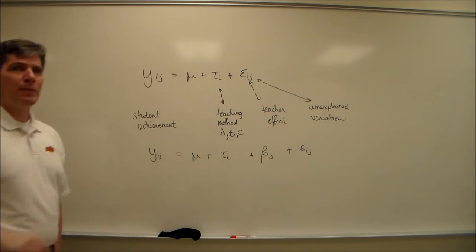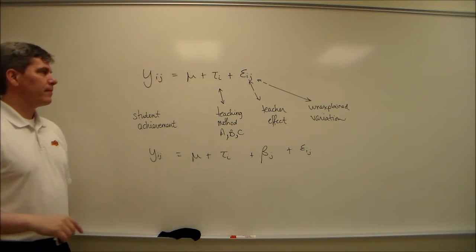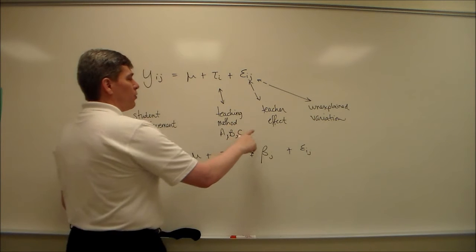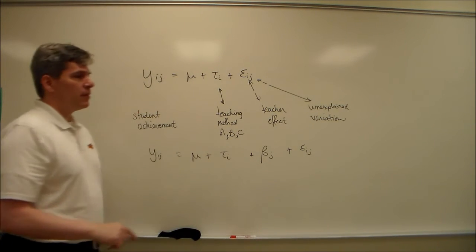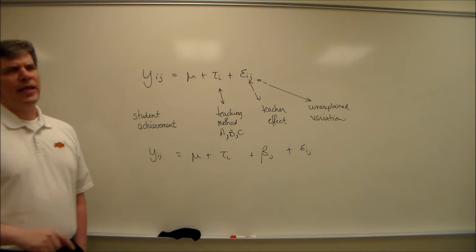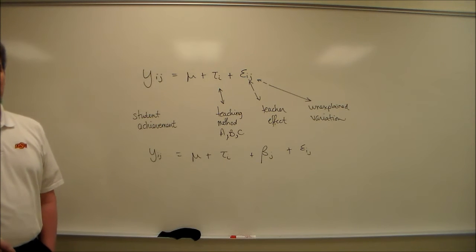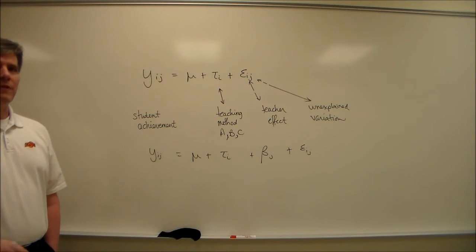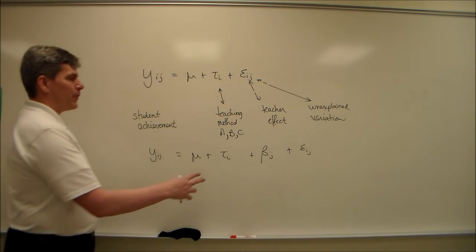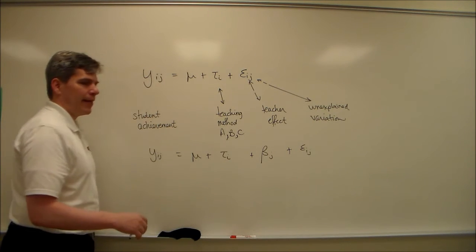And we're using the teacher to help explain some of this unexplained variation. And in doing so, we make a more powerful test. This teacher effect is called a blocking variable. It's also called a control variable because it controls some of the variation that we really want to control. But we don't really care about how to fix this task a lot.